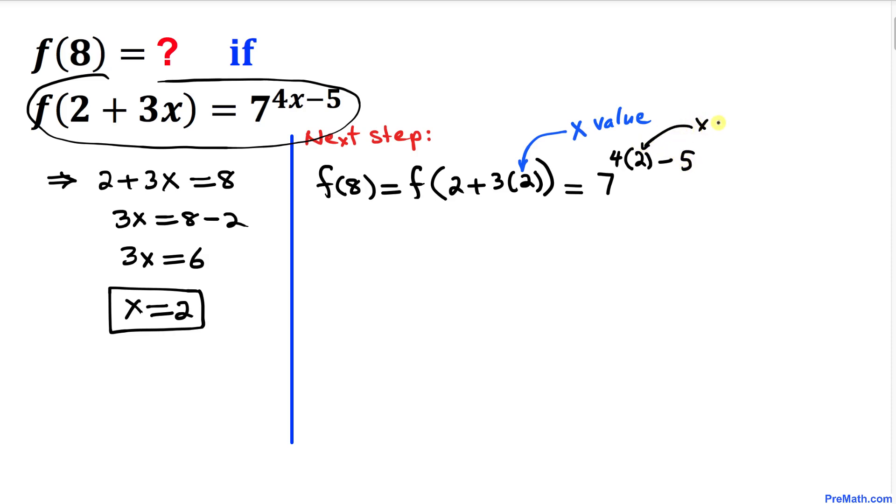This is our x value—we replace it by 2. Therefore, this can be written as 7 to the power of 4 times 2 is 8, minus 5 means 7 to the power of 3.